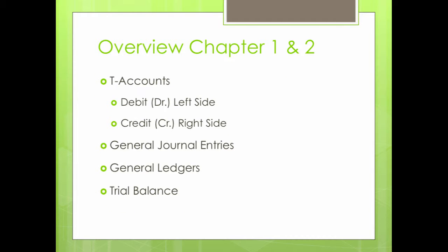We learned how to record accounts using the T accounts, which looks like a T with the name of the account on top. And we learned about debit and credit, which means debit is the left side and credit is the right side. Please remember that debit and credit is not positive or negative, because different accounts may cause the debit to increase or decrease. Likewise, different accounts may cause the credit to increase or decrease. All you need to know is that debit is left side and credit is right side.